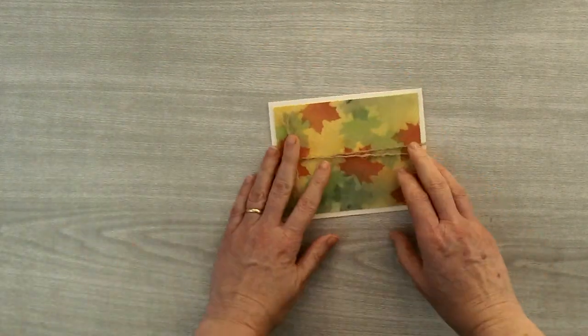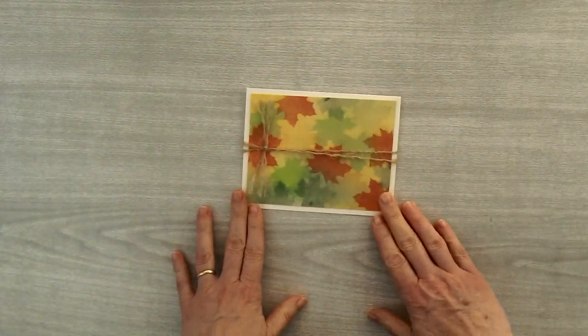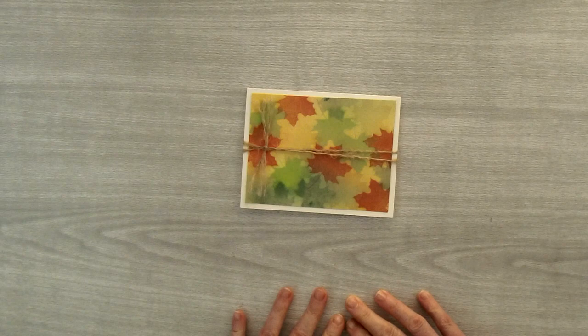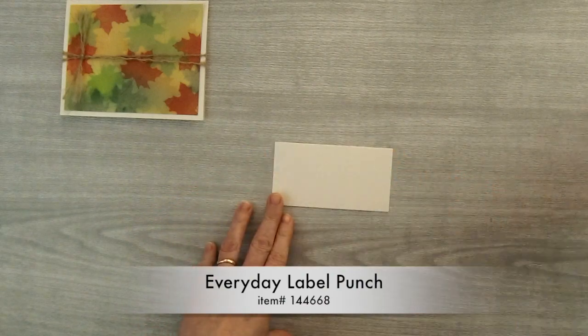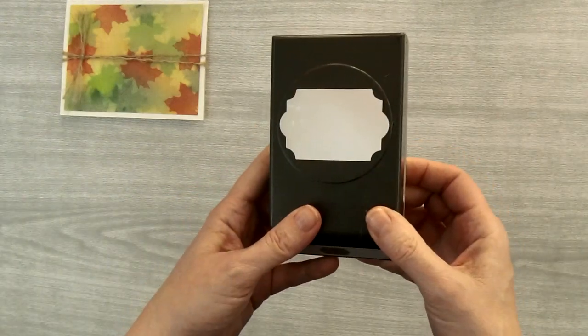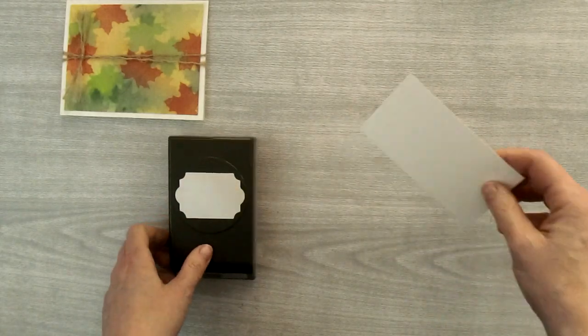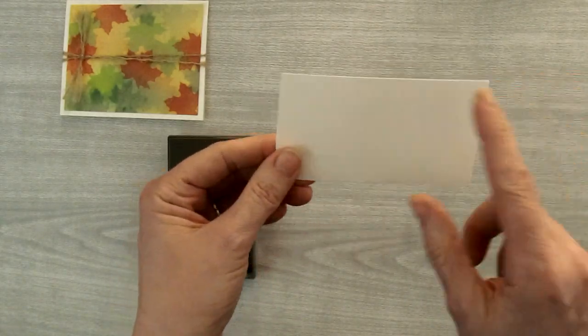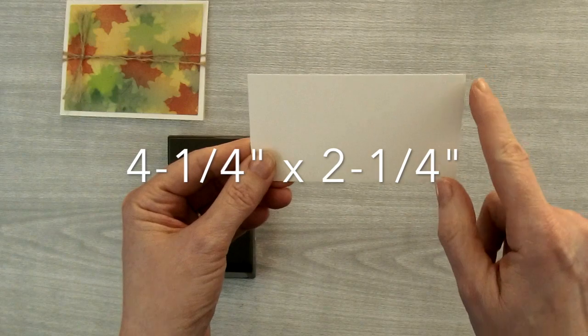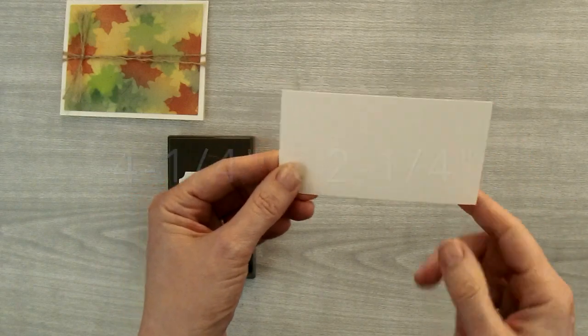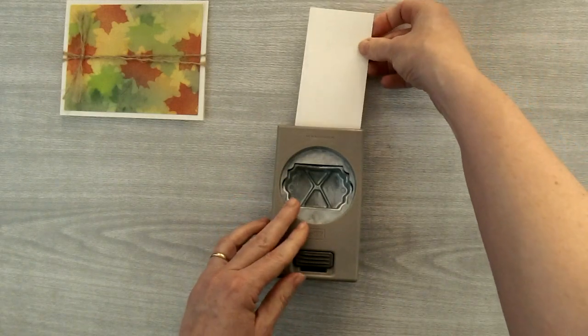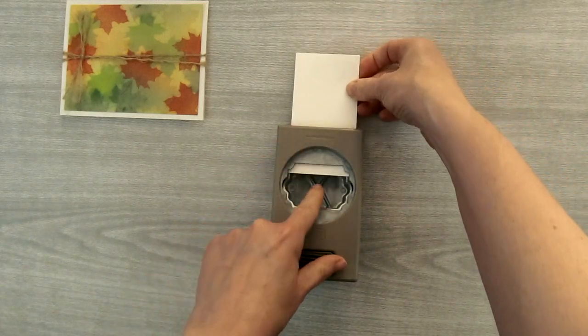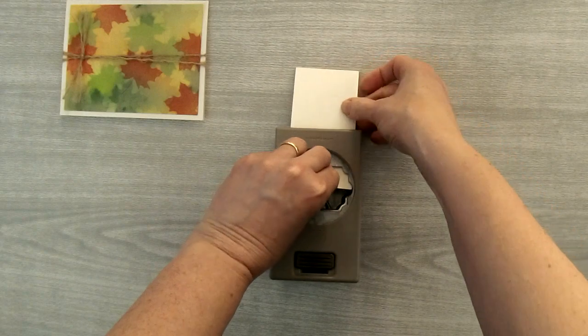So now we just need to stamp a greeting for the front of the card. And I'm going to create a fun little label using the Everyday Label Punch. And I need it to be a little bit bigger. So what I'm going to do is I'm going to take a piece of cardstock that is 4 1/4 inches by 2 1/4 inches. And I'm going to open up my punch. And I'm going to feed this piece of cardstock through the top of my punch and through the center of the punch.